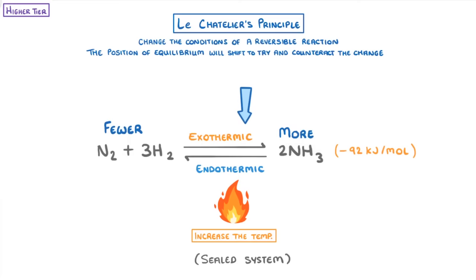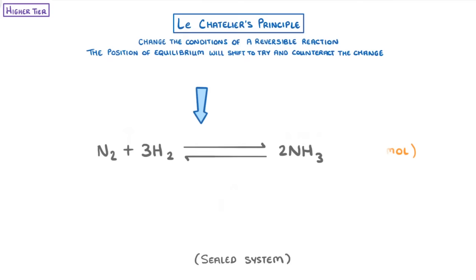On the other hand, if we increase the temperature of our system, then to oppose this change and decrease the temperature, the equilibrium would move in the endothermic direction, so to the left, which means we'd have more nitrogen and hydrogen, but fewer particles of ammonia.